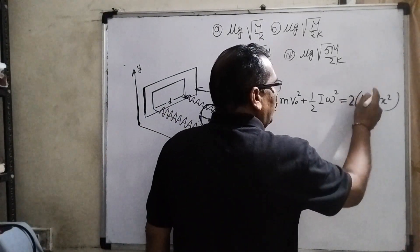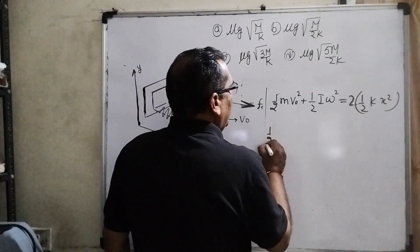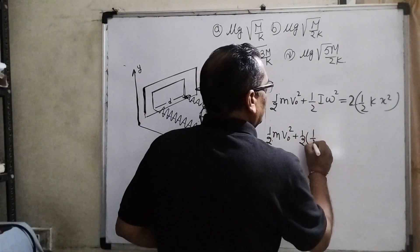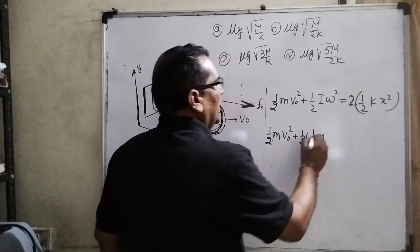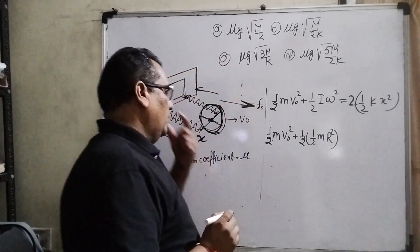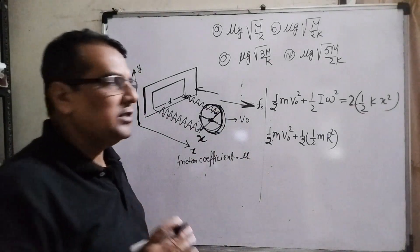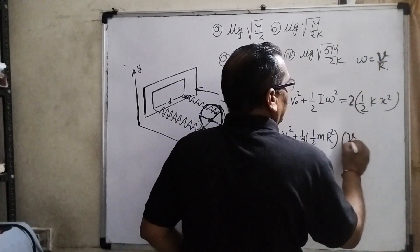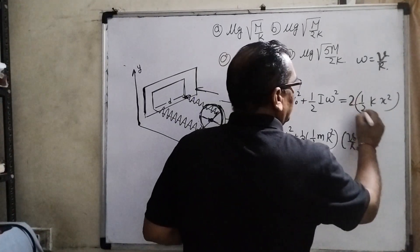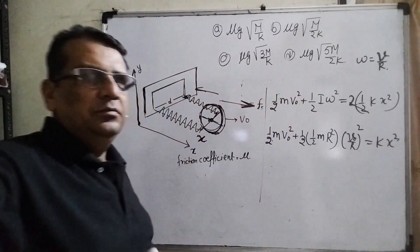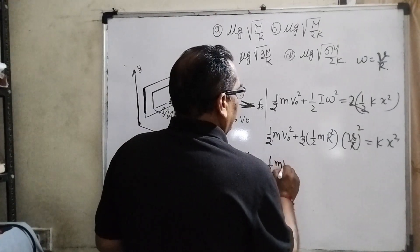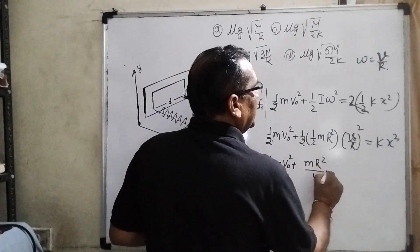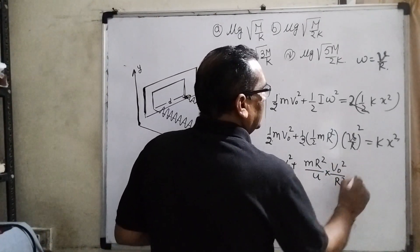Since there are two springs connected, the spring potential energy is 2 times (½kx²) equals kx². So: ½mv₀² plus ½·(mr²/2)·(v₀/r)² equals kx². Substituting and simplifying, the r terms cancel: ½mv₀² plus mv₀²/4 equals kx².